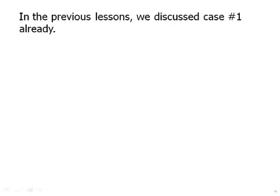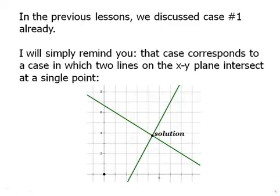Now, in the previous lessons, we discussed case one already. We discussed that in great detail, how to find the solution, the single solution, either by substitution or elimination. I will remind you that case corresponds to a case in which two lines in the x-y plane intersect at a single point. So usually, you pick one random line, another random line, and what happens is you're just going to get those lines intersecting at a single point. So that is by far the most common case, but it's not the only case, and there are two other cases possible.